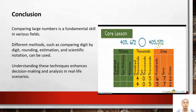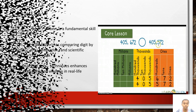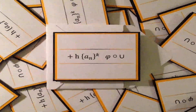Conclusion: comparing large numbers is a fundamental skill in various fields. Different methods such as comparing digit by digit, rounding, estimation, and scientific notation can be used. Understanding these techniques enhances decision making and analysis in real life scenarios. Thank you so much for watching my video.